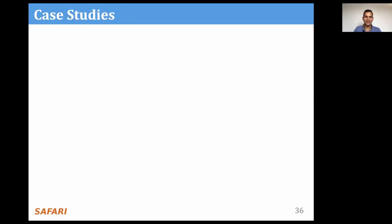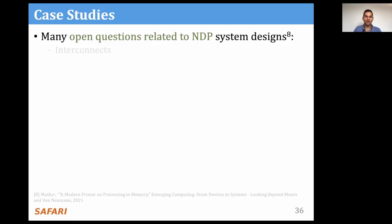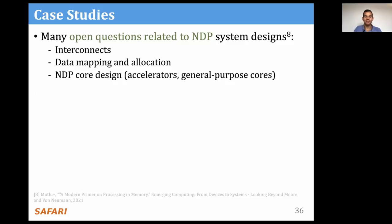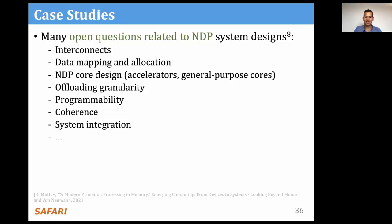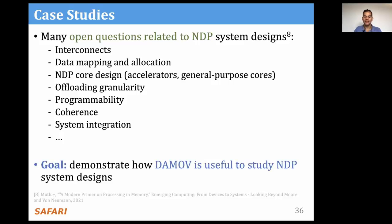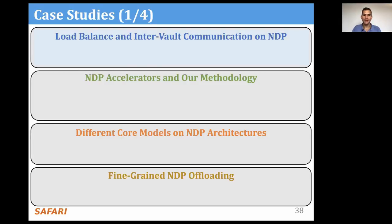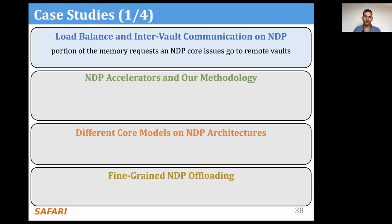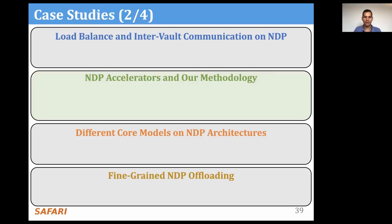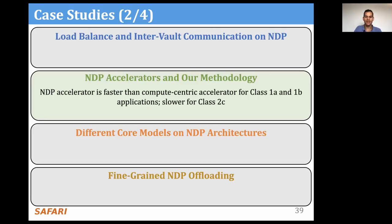Finally, I'm going to briefly talk about our case studies. There are still many open research questions related to NDP system design, including how to design good interconnections, data mapping and allocation, NDP core design, offloading granularity, programmability, coherence, system integration, and much more. Therefore, our goal is to demonstrate how WokitaMove can be useful to study some of those design questions. We provide four case studies. In the first, we study the load balance and inter-vault communication of NDP cores, observing that a portion of memory requests go to remote vaults, increasing memory access latency. In the second, we evaluate performance benefits of executing benchmark applications on an NDP accelerator versus a compute-centric version, finding NDP faster for class 1a and 1b applications but slower for class 2c.